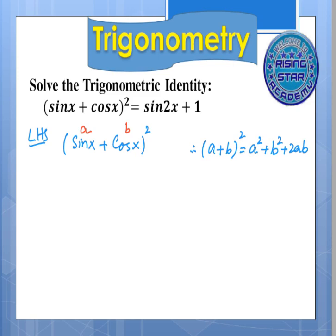So the next step would be sine x whole square plus cosine x whole square plus 2 times sine x times cosine x.